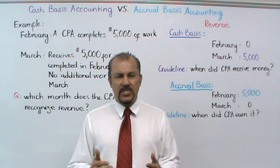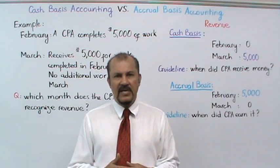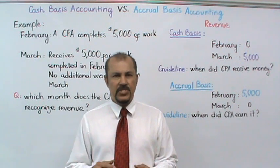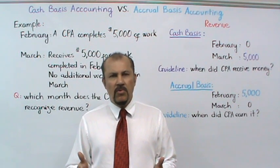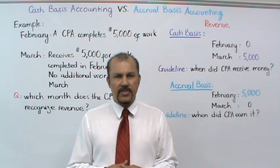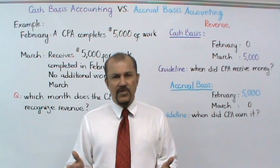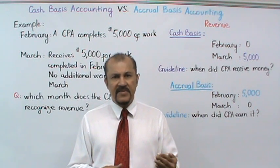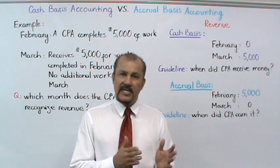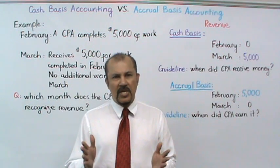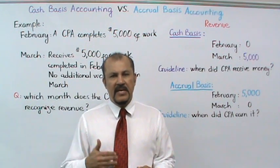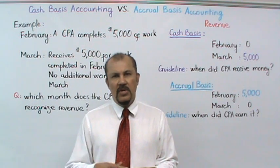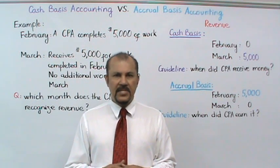What are these accounting systems? These are two different types of accounting methods by which a company can maintain their records. How does a company know which one to use? It depends on their individual circumstances, but as a broad guideline, smaller companies and service companies tend to use cash basis accounting, while larger companies and companies that sell or maintain inventory tend to use accrual basis accounting.